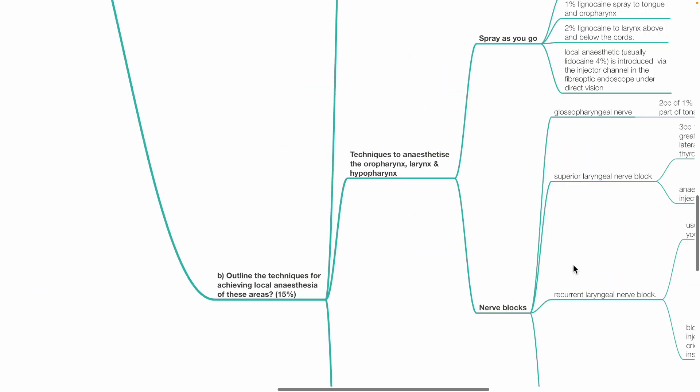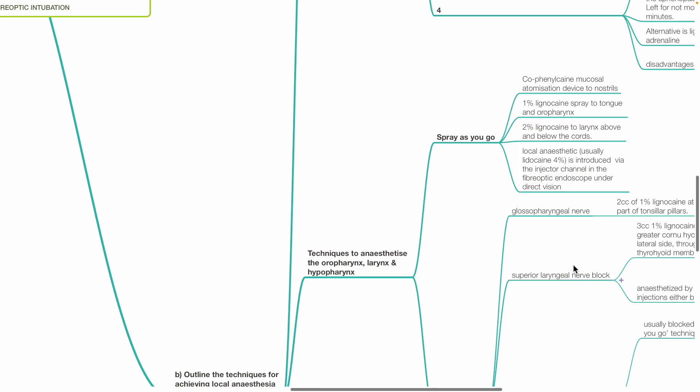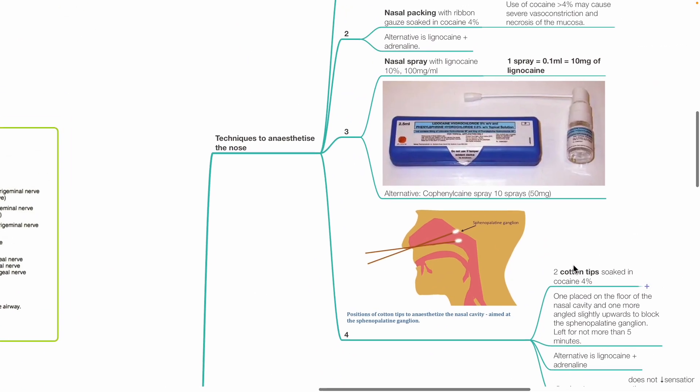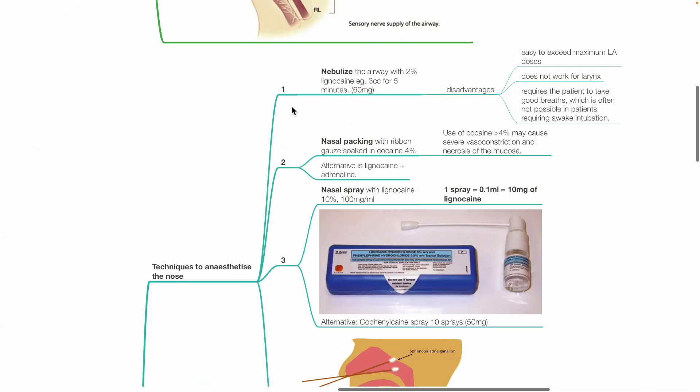B. Outline the techniques for achieving local anesthesia in these areas. Several techniques are available to anesthetize the nose. The first is to nebulize the airway with 2% lidocaine. For example, 3 cc for 5 minutes, 60 mg. Disadvantages: if too much lidocaine is used, it is easy to exceed maximum LA dose. It does not work well for the larynx.